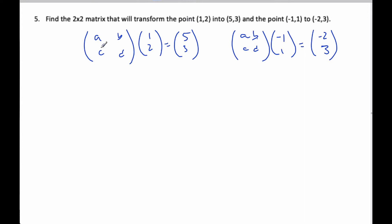And so I have 4 variables to find. That means I'm going to end up with 4 equations. So if I consider doing this calculation, it's A times 1, B times 2, so A plus 2B will equal 5.